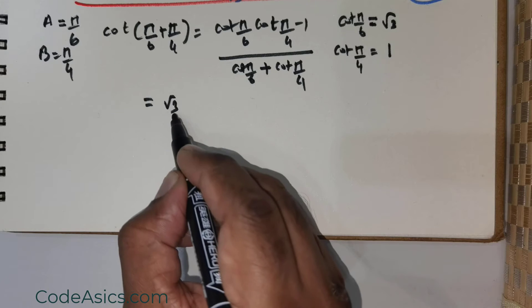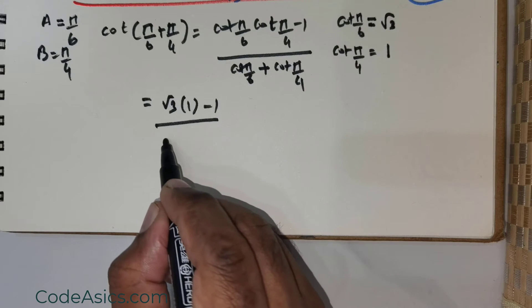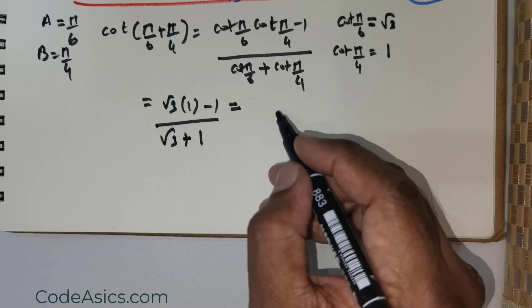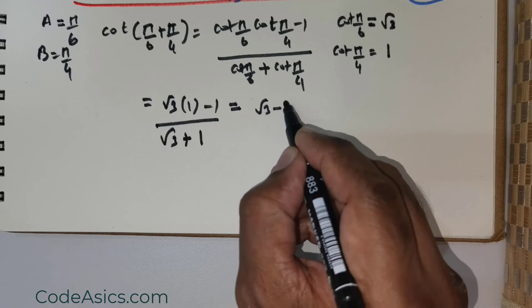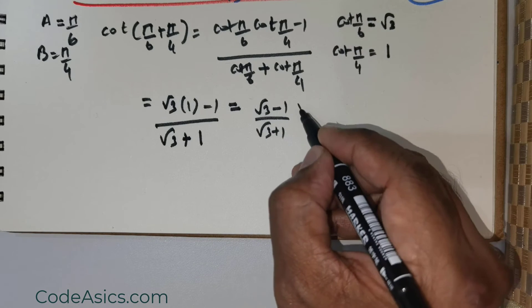So having got that, I'm going to substitute the values over here. This is going to be (√3 × 1 - 1)/(√3 + 1). So I've got a value which is (√3 - 1)/(√3 + 1).